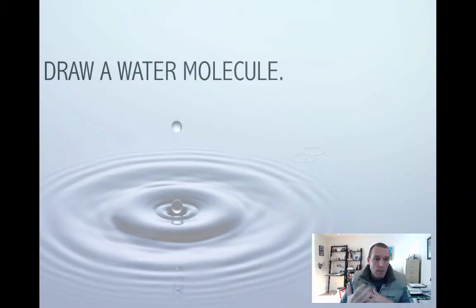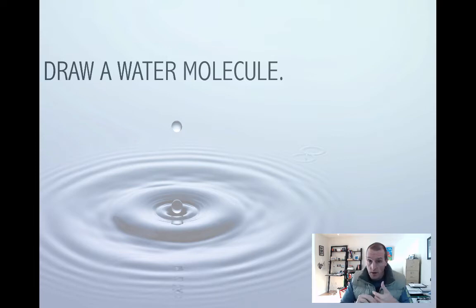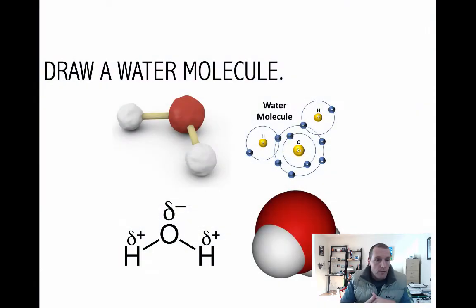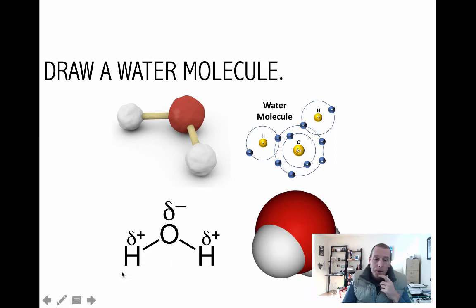When I ask you to stop the video and do something, it's really important that you do it, otherwise you don't really learn a lot. So what might you have drawn? Here are some things you could have drawn. Here's one representation of a water molecule — a ball and stick model. Other people would have drawn something like this, a little more chemically complicated. Even more complex is this diagram here where the electrons have been drawn in. And then some of you may have drawn something like this space-filling representation.